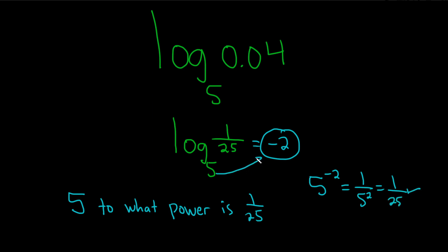Just follow the arrows. 5 to the negative 2 equals 1 over 25. I hope this video has been helpful. Good luck.